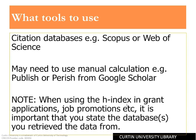It is very important when using the H-Index for grant applications or promotions to state the database from which you retrieve the data and thus verify the citations. While it might be tempting to use an H-Index figure of 67 from Google Scholar, if your H-Index in Scopus is only 8, then it is not going to look particularly credible. For a practical demonstration of how to find or calculate your H-Index, please view the excellent tutorials prepared by Scopus and Web of Science.